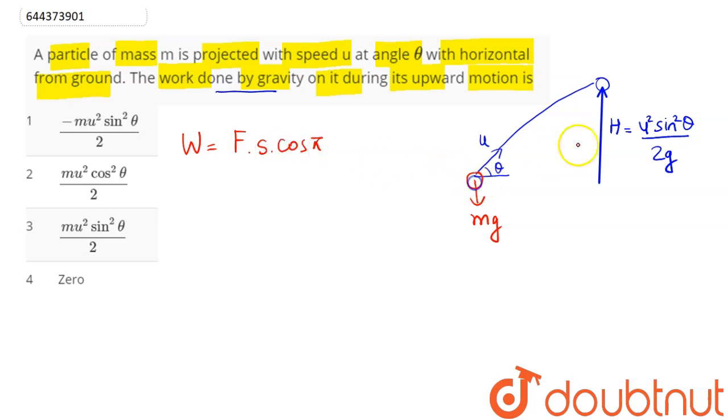So this is minus, so here g and g cancels out. Hence this comes as minus m u square into sine square theta divided by 2, which here is option number 1. Hence amongst the 4 options, option number 1 is the correct answer, hence 1 is our answer.